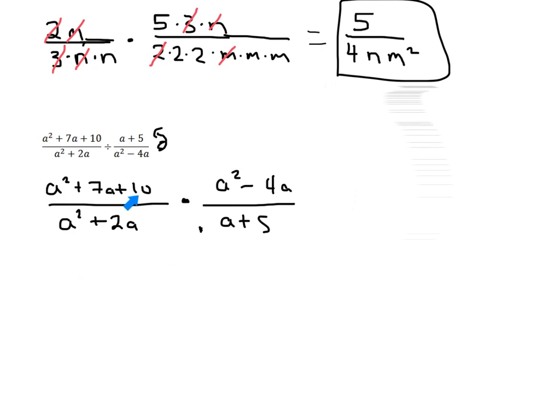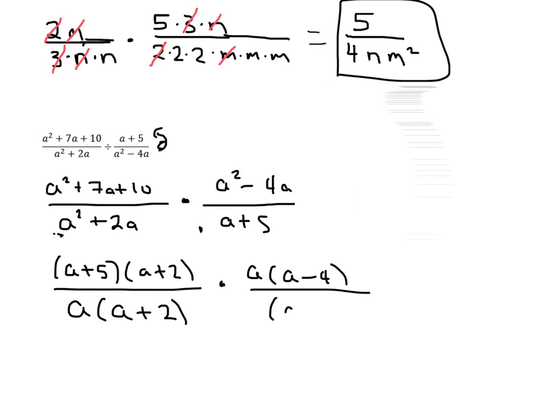So step one is to flip the second fraction and make this a multiplication. Now we're going to factor everything. Take a look right here. This is going to factor using shortcut. Factors of 10 that add to 7 are going to be 5 and 2. So the numerator is going to factor into a plus 5 and a plus 2. Down here in the denominator, a squared plus 2a. We can take an a out in the denominator. They both have an a in common. So we take an a out. That's going to give us a plus 2 times. Up here in this numerator, this numerator, you can see there's an a in common. So we're going to do a GCF as well. Take the a out. And what's going to be left is a minus 4. And on the bottom, we have a plus 5.